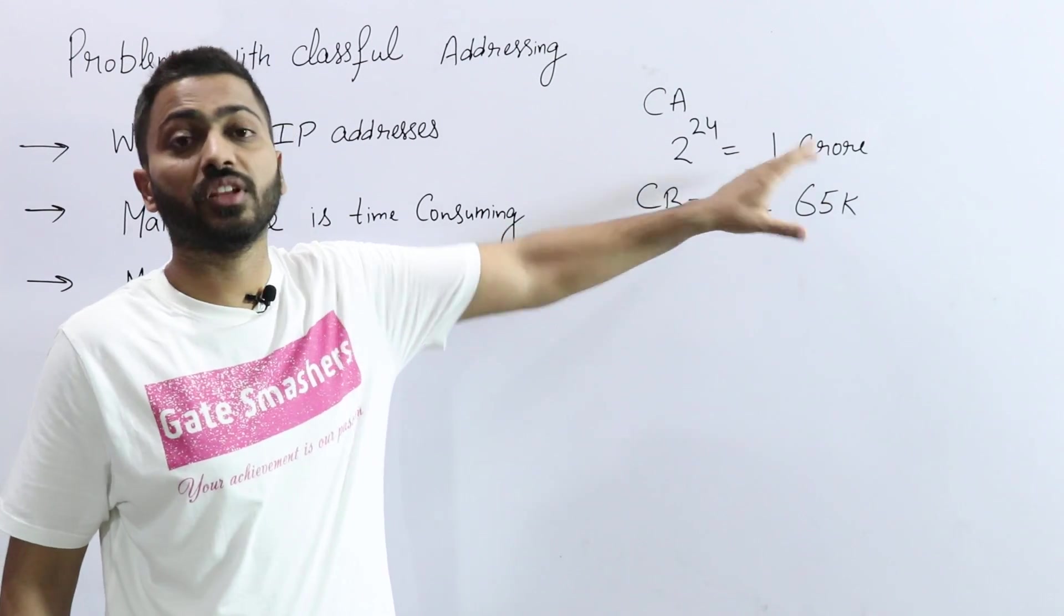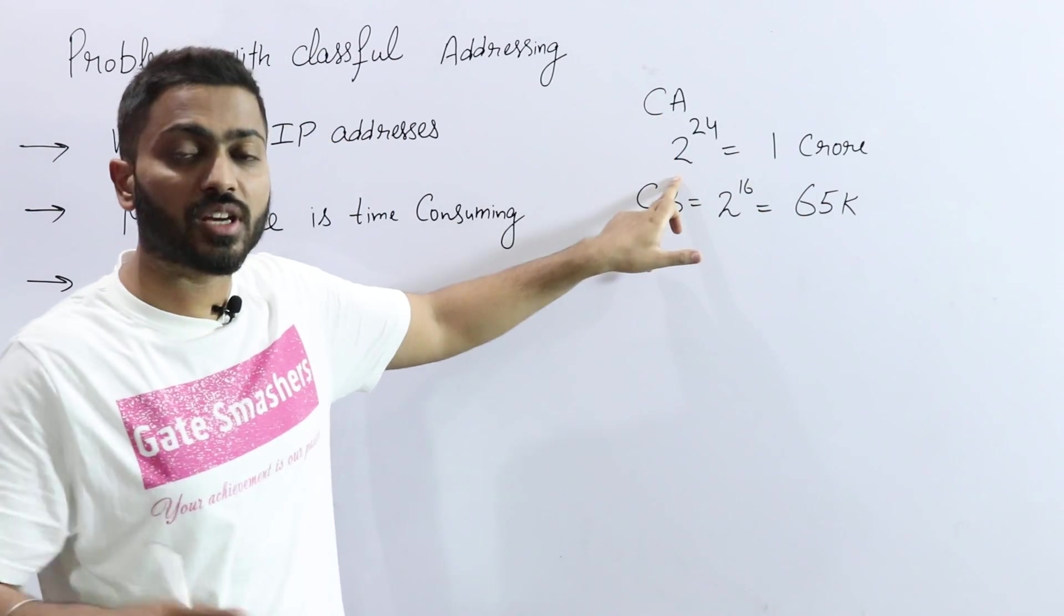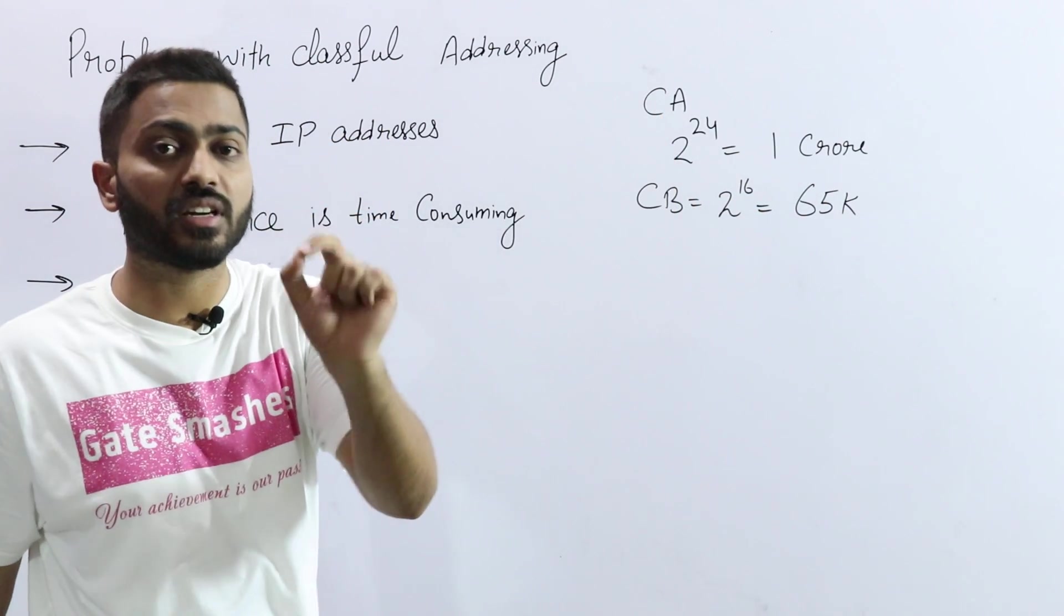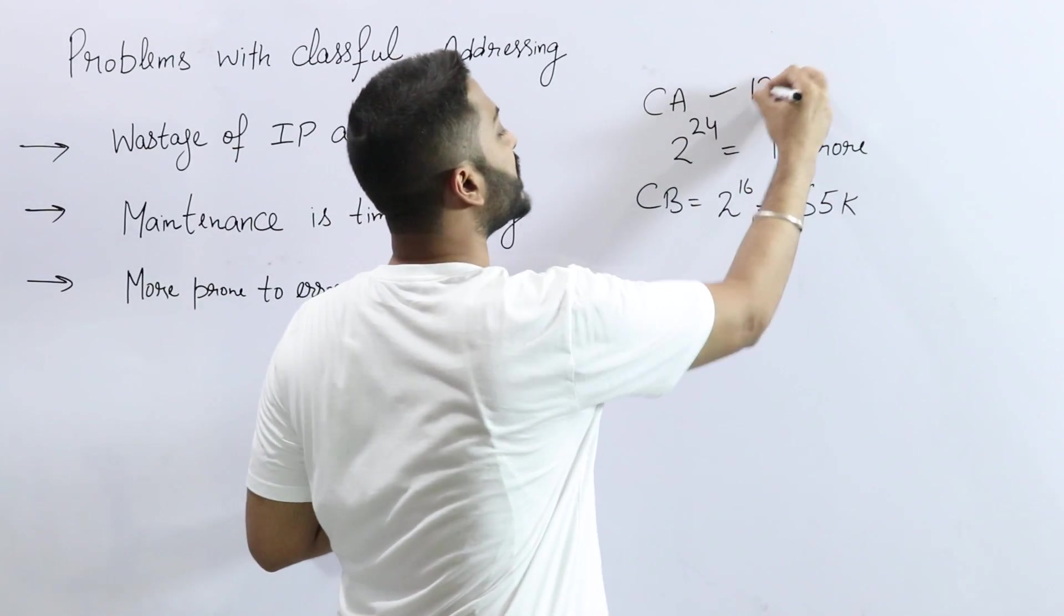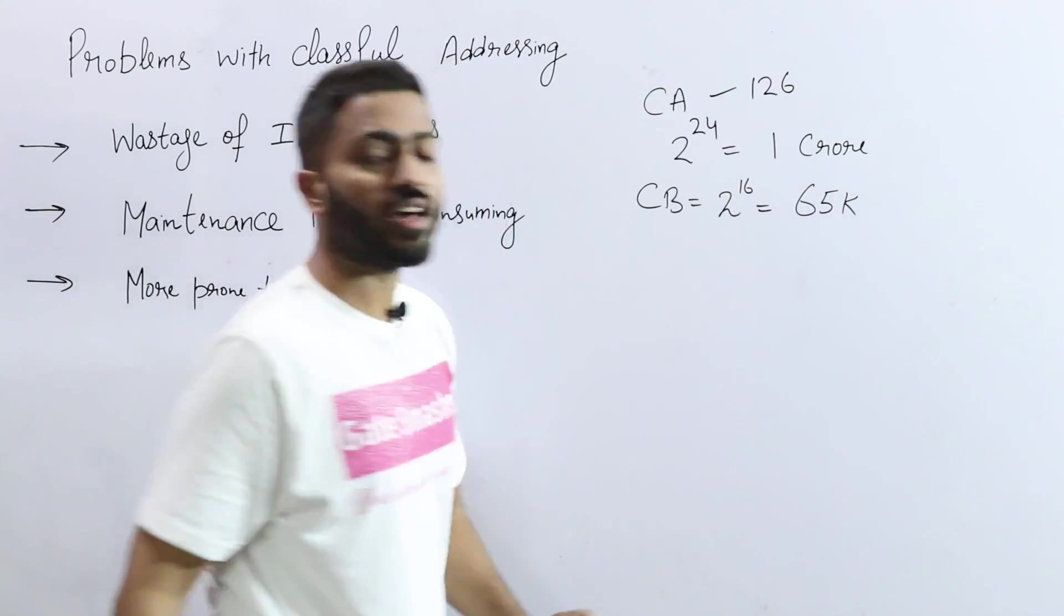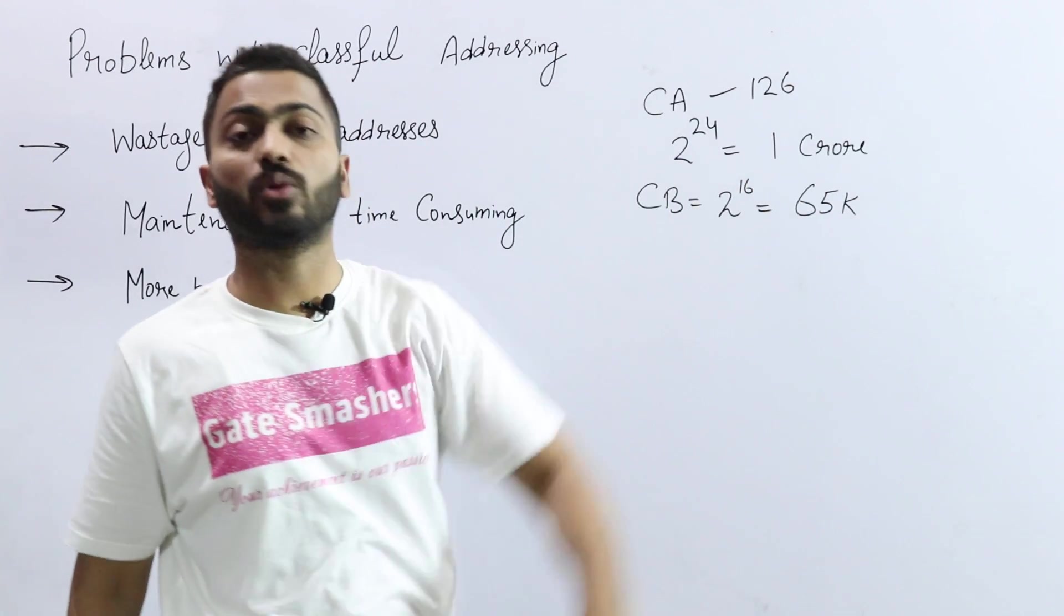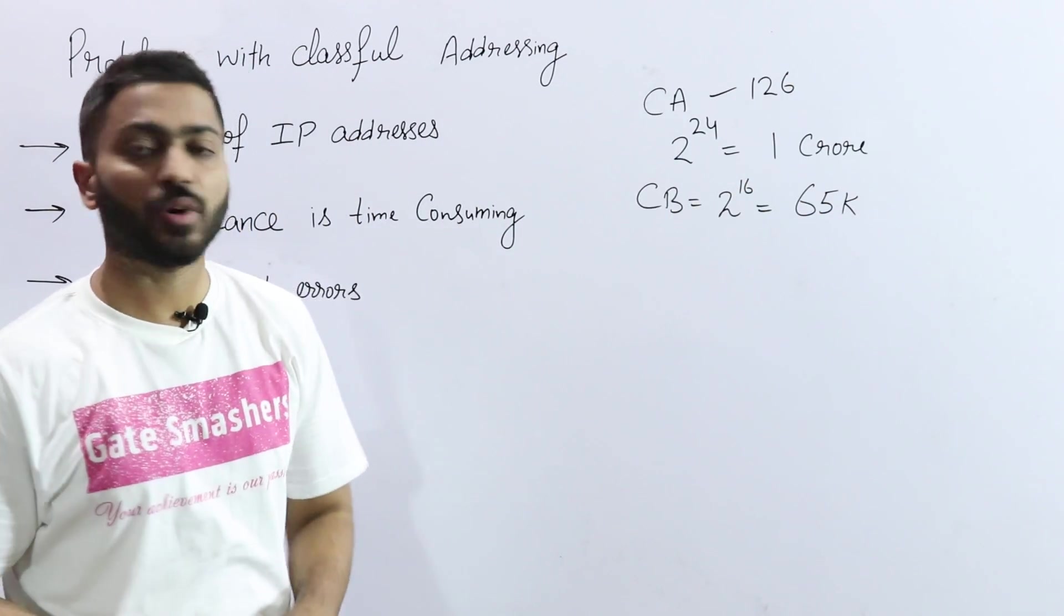And if I talk about class A, there are very limited networks of class A, because there are only 126 networks possible in class A. But in every network, more than 1 crore number of hosts can be possible.